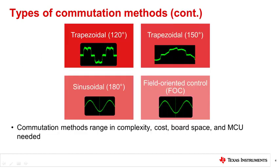The four main commutation methods are trapezoidal 120 degrees, trapezoidal 150 degrees, sinusoidal 180 degrees, and field-oriented control.